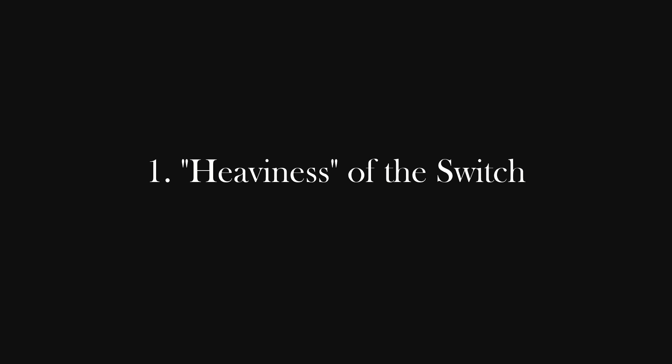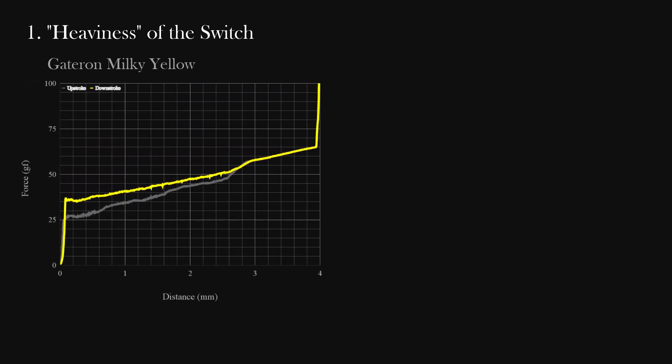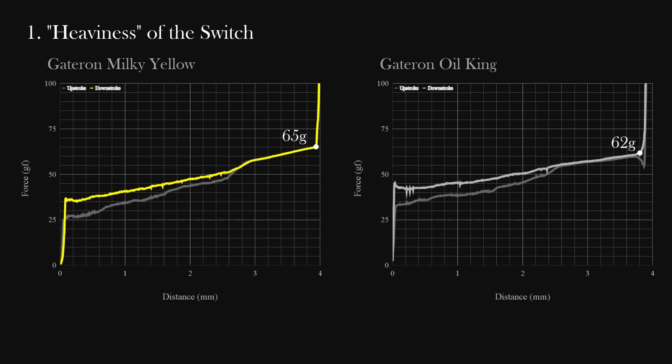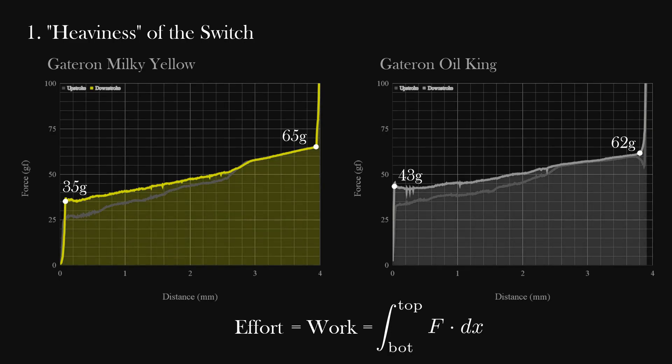Number one, the heaviness of the switch. How heavy a switch is seems like a simple answer, but I'll give an example. Take a Gateron Milky Yellow versus a Gateron Oil King. The bottoming out force is heavier on yellows, but the switch starts off heavier for Oil Kings. So which switch is heavier? I think what people mean by heavy is the amount of effort it requires to press a switch. That effort is most accurately characterized not by force, but the work, which is the integral of force times distance. On this graph, that would be the area under the curve. Calculating this, the Oil Kings would technically be heavier, but with this small of a difference, I think we would feel the switches to be equally heavy.